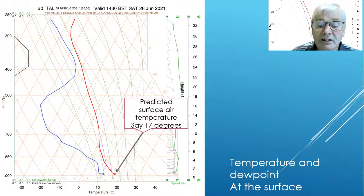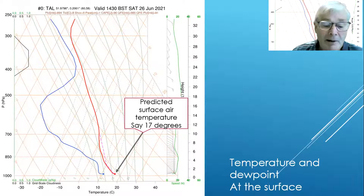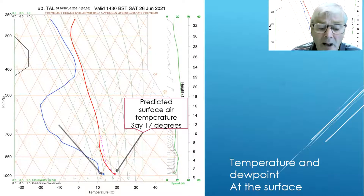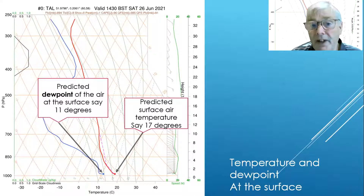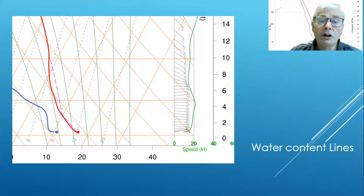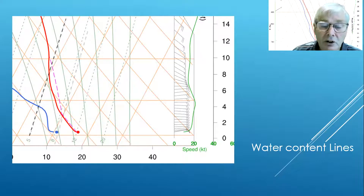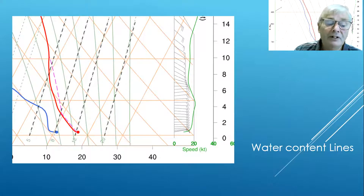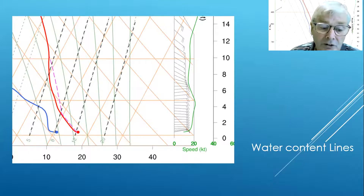For our prediction of thermals we'll be looking at what's happening at the surface. Looking here we can see the predicted temperature at the surface — the temperature of the air close to the surface — is about 17 degrees. The predicted dew point of that mass of air near the surface is about 11 degrees, so a six-degree difference between the dew point and the ambient air temperature. Moving in more closely, I'll show you the water content lines — the green dotted lines running upward — showing the amount of water in that particular mass of air. These are important when we're trying to determine cloud bases.